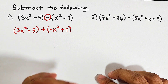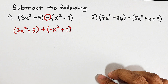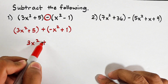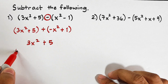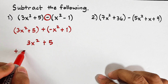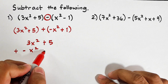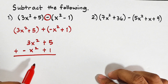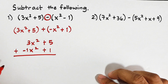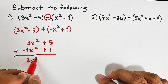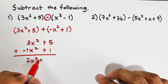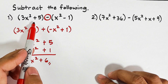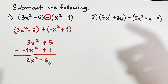We can do it horizontally or vertically, but in this case I will do it vertically. We have 3x squared plus 5, plus negative x squared plus 1. Adding: 3x squared plus negative x squared — since there is a negative 1 coefficient — is 2x squared. Then 5 plus 1 is 6. So the difference of 3x squared plus 5 and x squared minus 1 is 2x squared plus 6.